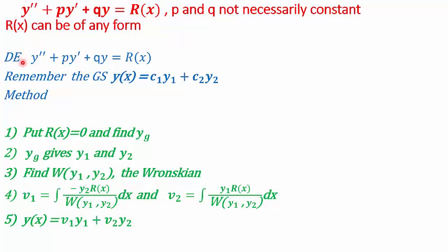So let's begin. Given a second order differential equation y'' + py' + qy = r(x), we know that the general solution is y(x) = c1·y1 + c2·y2. Now, if we can take c1 and c2 to be some functions v1(x) and v2(x) — unknown to us — and find them, replacing c1 and c2 by v1 and v2, we can find the solution.